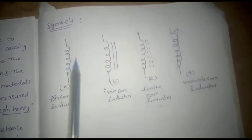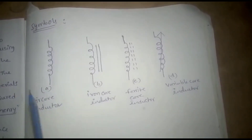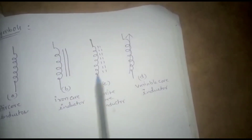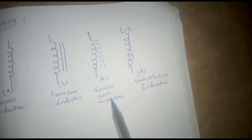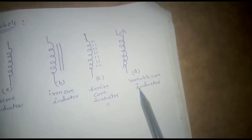Now we are discussing about the symbols. The symbol indicates the inductor here. This is the symbol for our inductor cores, including the variable core indicator.